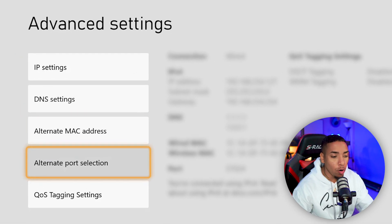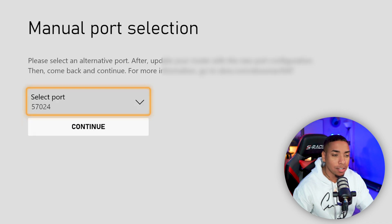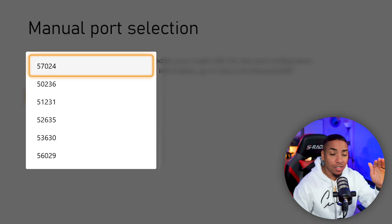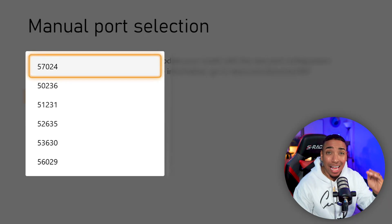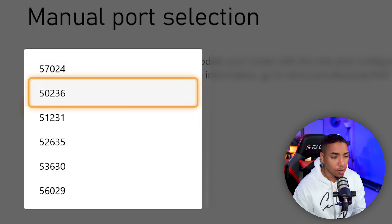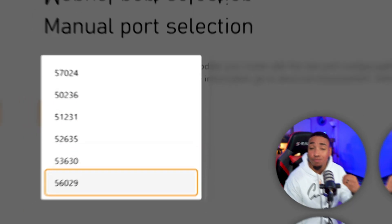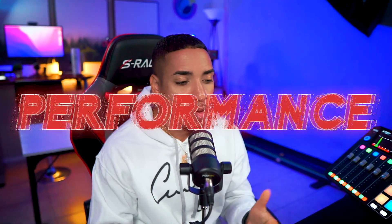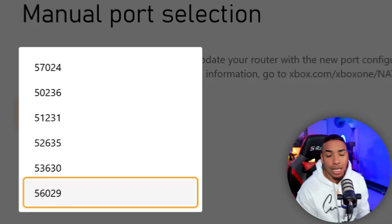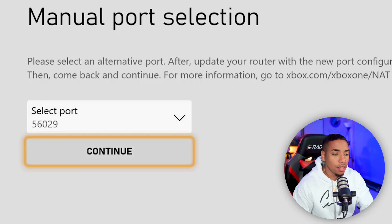Then you want to come to where it says Alternate Port Selection. Change this to manual as well, and then you want to select the last one on the list. Don't ask me why — I've tested them all, and every single time the last one has given me the best performance. The last one I have is 56029. It may be a little different for you, but just pick the last one on the list.